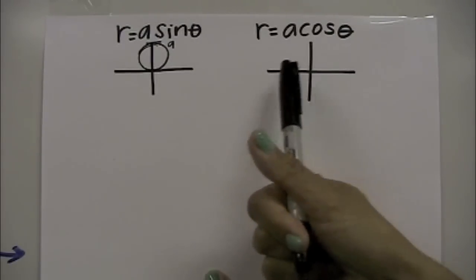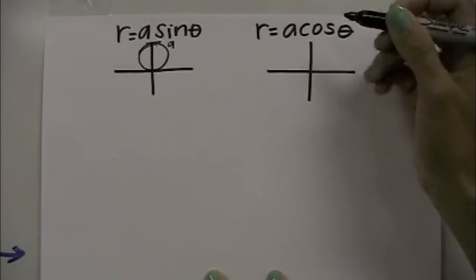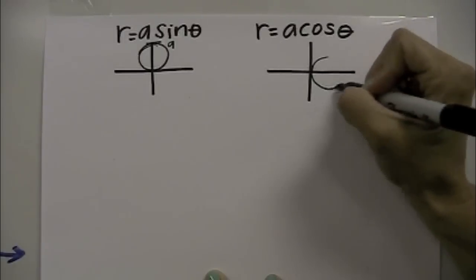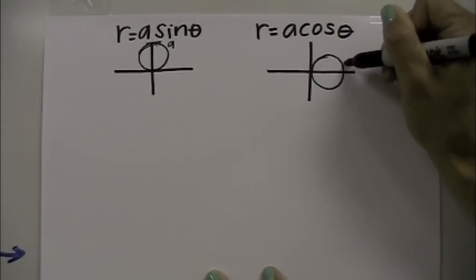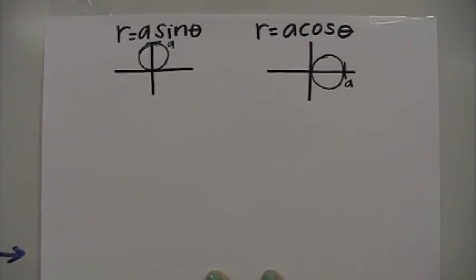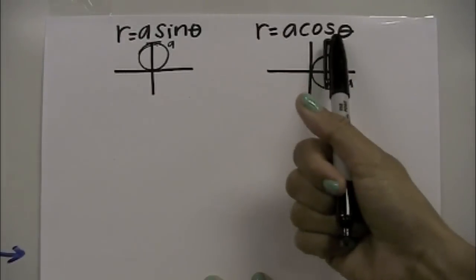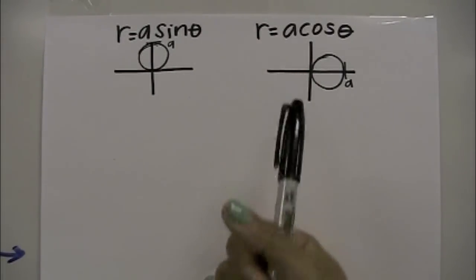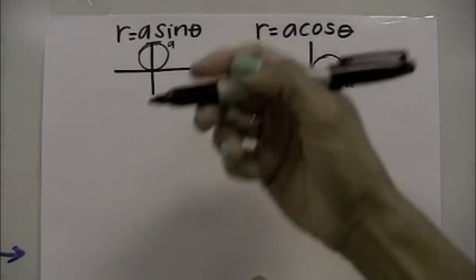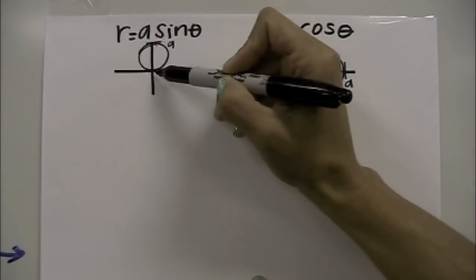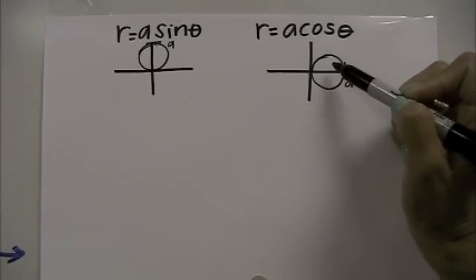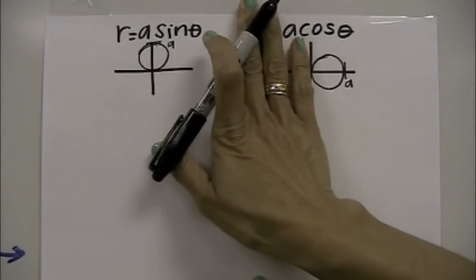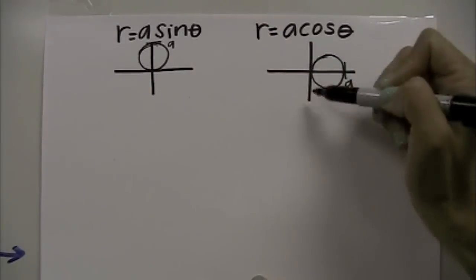For cosine, because it goes along the x-axis, my circle would be over here, where that value would be a. So a is going to be your diameter, and sine versus cosine indicates which axis it falls along. If a were negative for cosine, this circle would fall below the x-axis. If a were negative for sine, this circle would be on the left side of the y-axis.